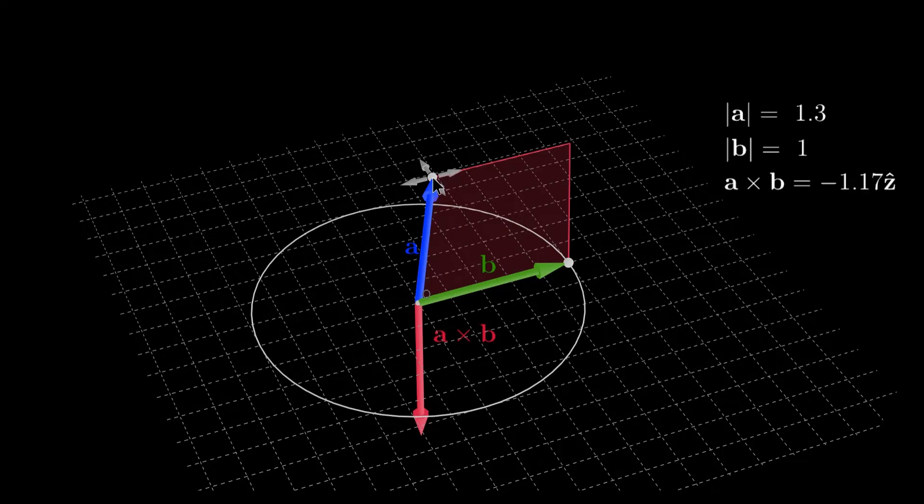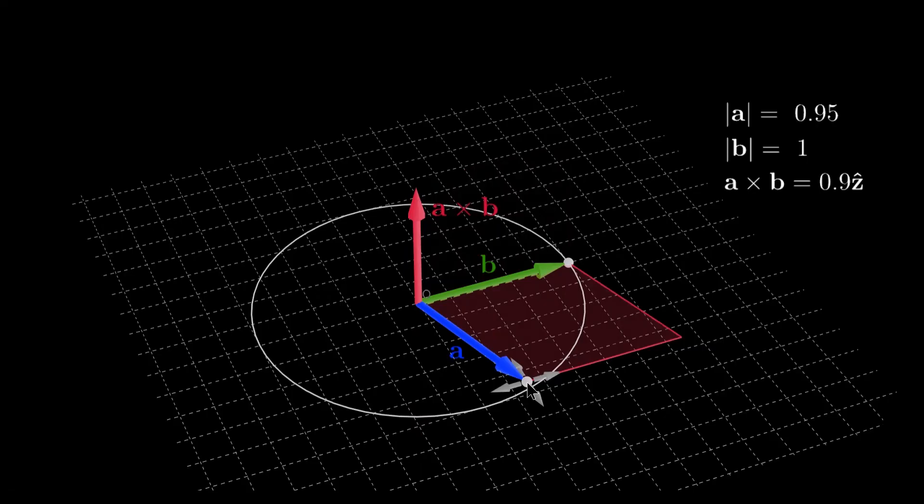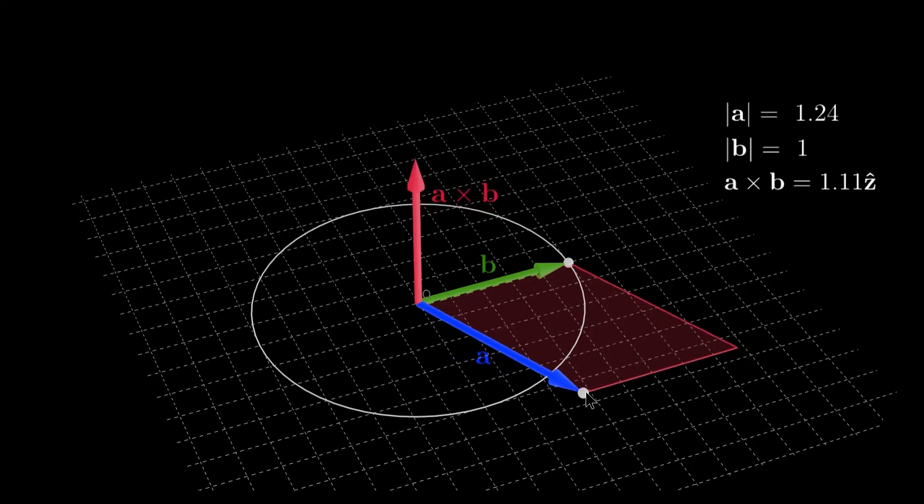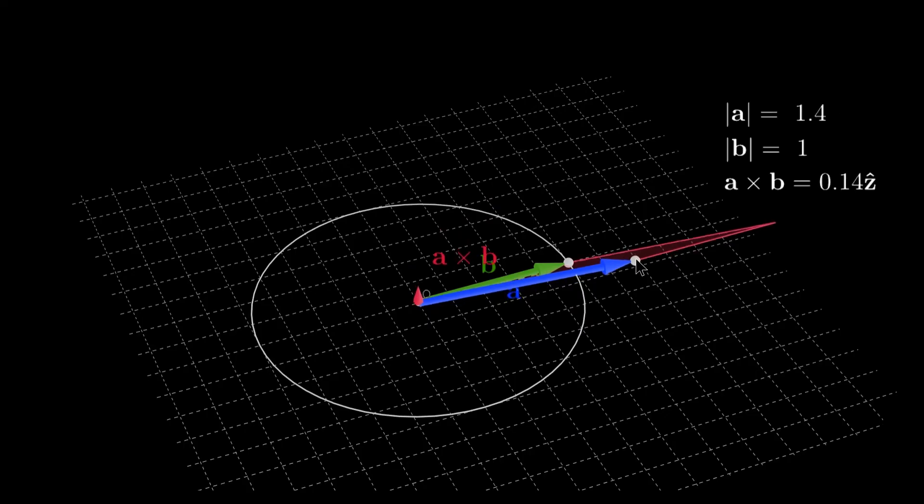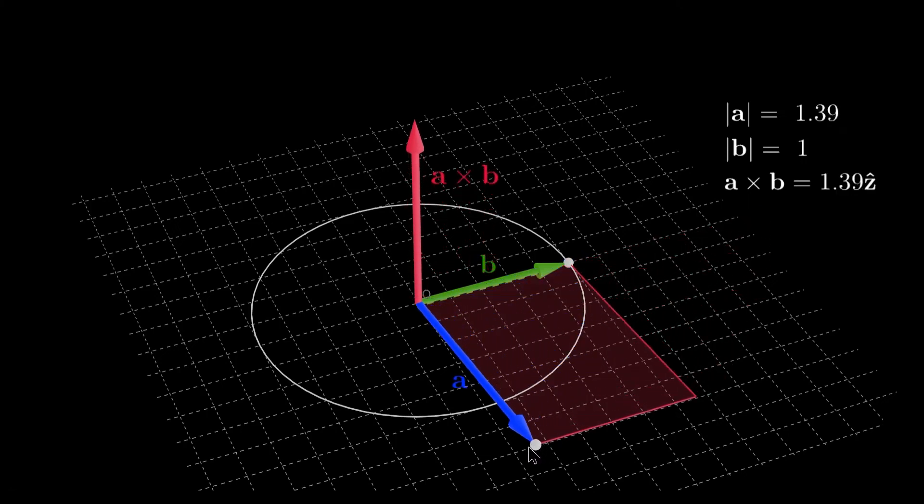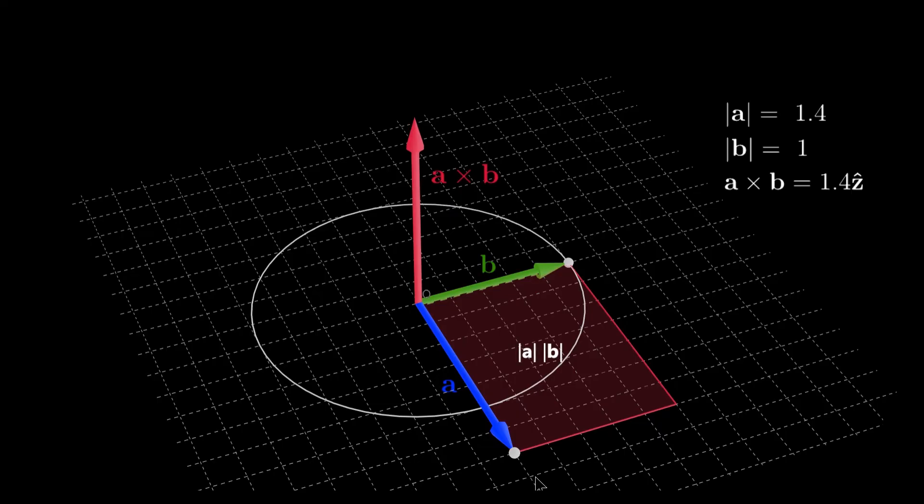The second thing to notice is that the length of vector a cross b is equal to the area of the parallelogram formed by the vectors a and b. When the two vectors are parallel, the area is zero, and therefore the cross product is zero. If the two vectors are orthogonal, then the parallelogram turns into a rectangle, and therefore the length of a cross b is simply the product of the length of a times the length of b.